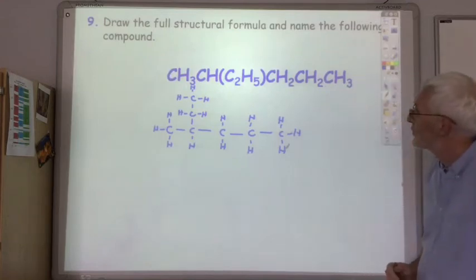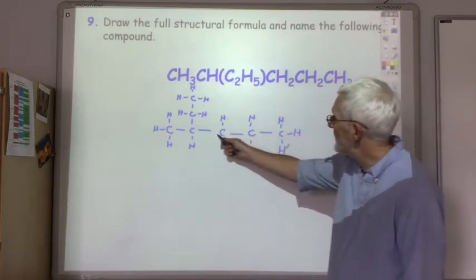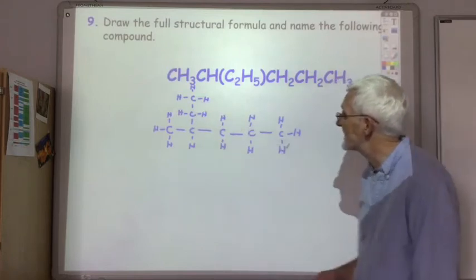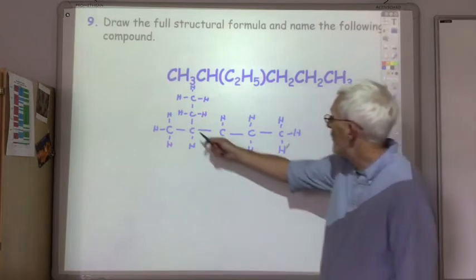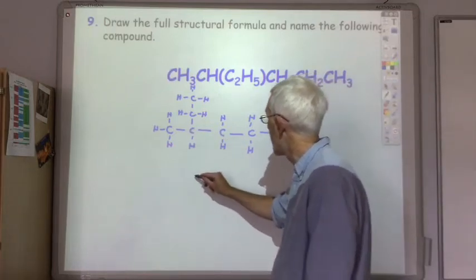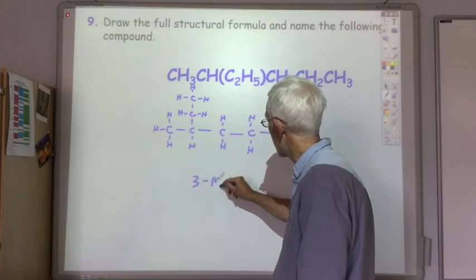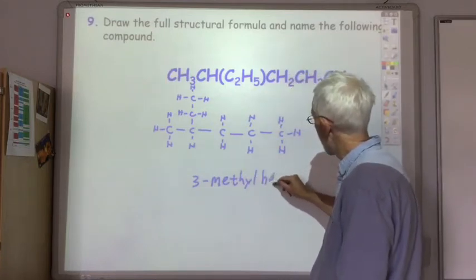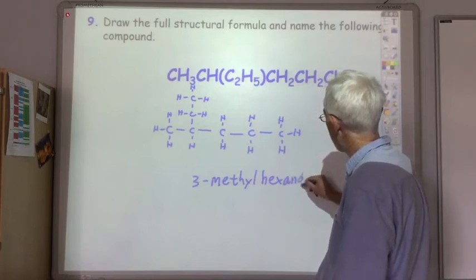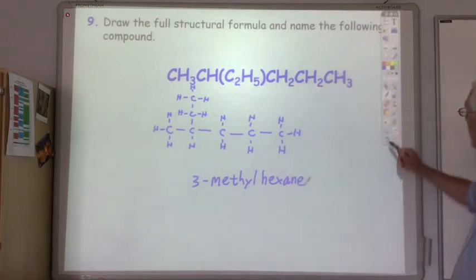Okay, so the main chain in this case is one, two, three, four, five, six, so it's a hexane, and it's got a methyl group on the third carbon, so it's 3-methylhexane. And finally...